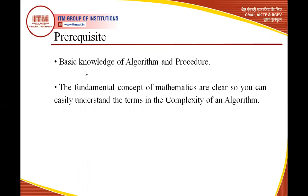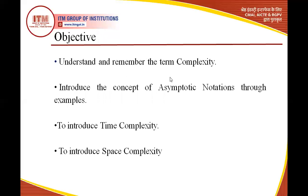The prerequisite is basic knowledge about algorithms and procedures — just an introduction to algorithms and procedures — along with fundamental concepts of mathematics, so we can understand the complexity of an algorithm. The objective is to understand and remember the term 'complexity', introduce asymptotic notations through examples, and get a slight introduction to time and space complexity of an algorithm.